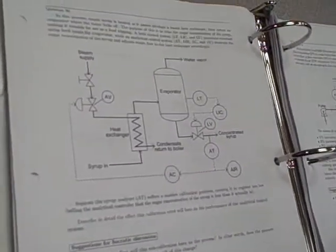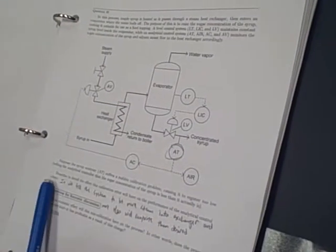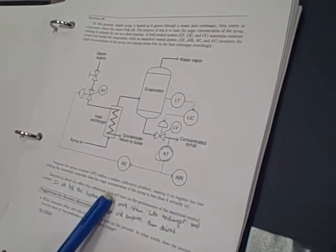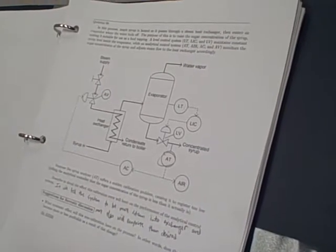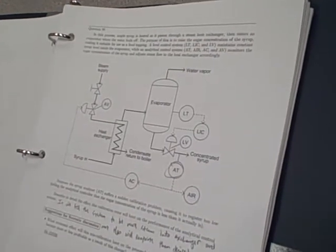Alright, so number 90. Suppose a syrup analyzer suffers a sudden calibration problem causing it to register too low, telling the analytical controller that the sugar concentration of the syrup is less than it actually is. Describe in detail the effect of this calibration error on the performance of the analytical control system.